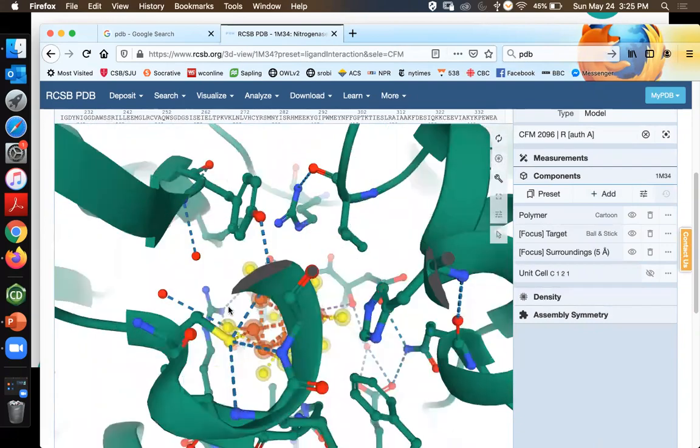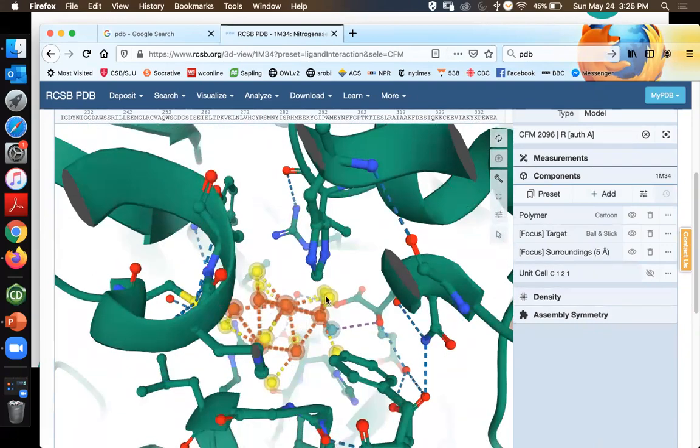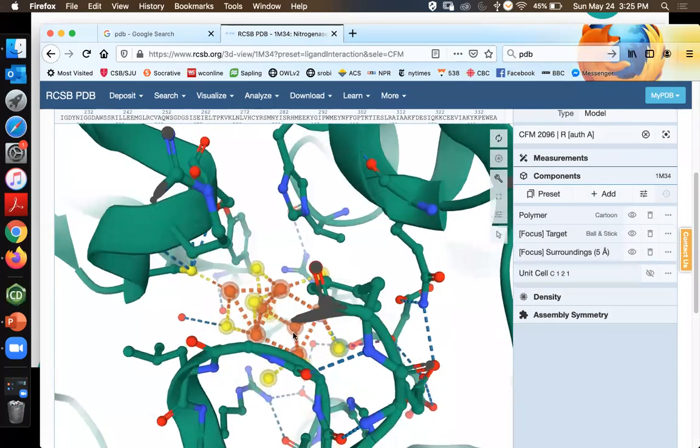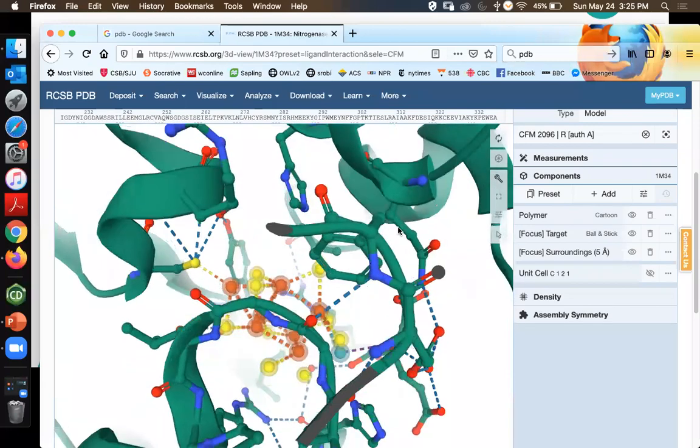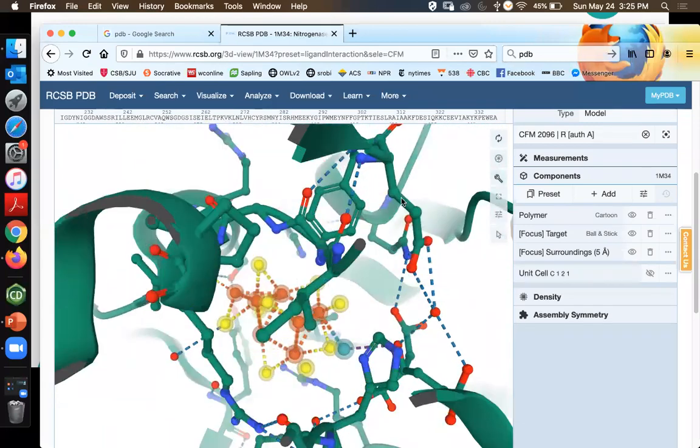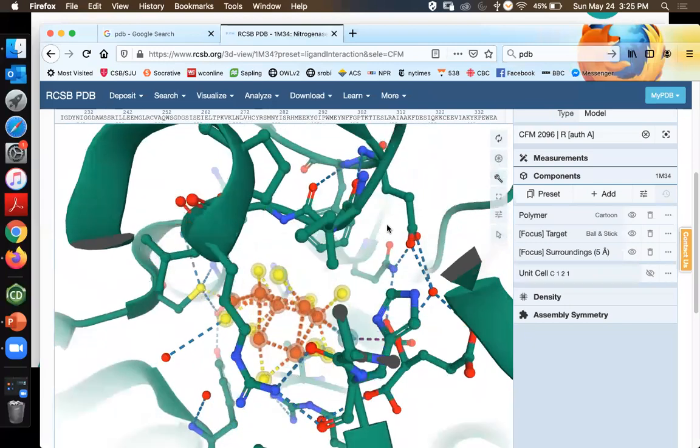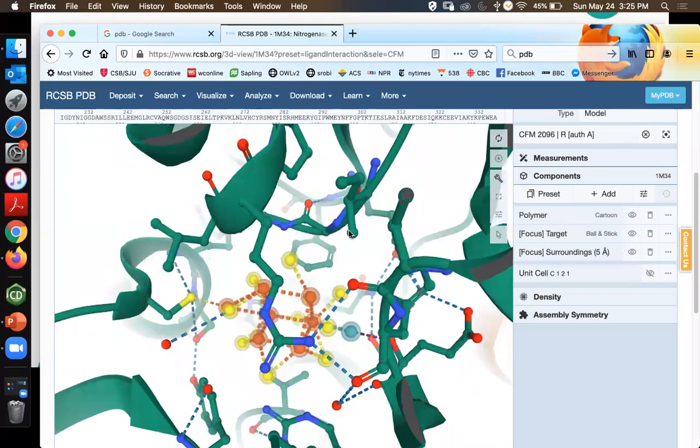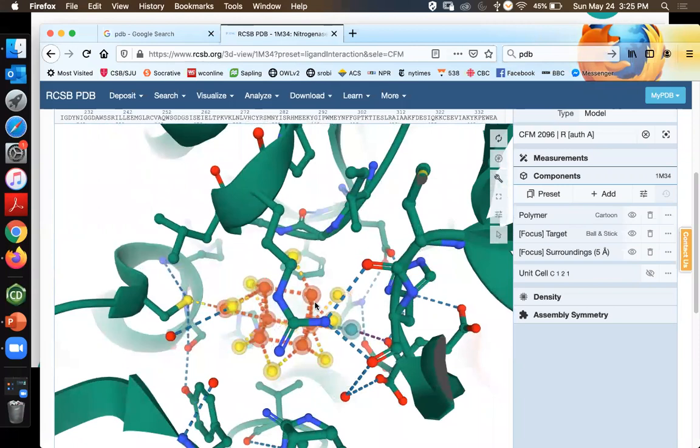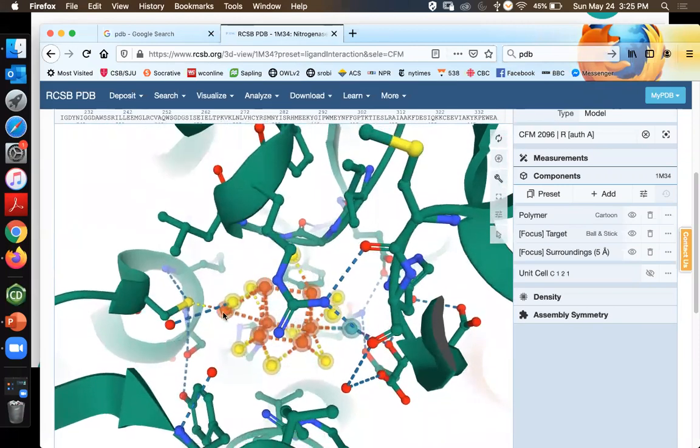As I rotate around it, this is an iron-sulfur cluster. These red atoms are irons, the yellow ones are sulfurs. Most of them are sulfide atoms, sulfide ions, so a sulfur 2-minus ion. One of the sulfurs on the left is a part of the system, a piece of protein, and over on the right we have a molybdenum atom here.